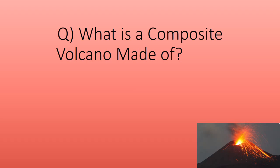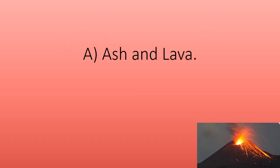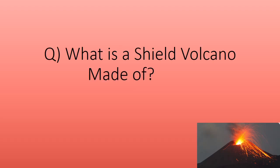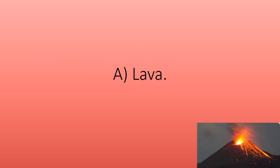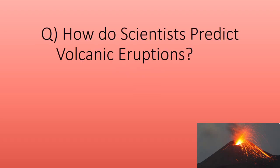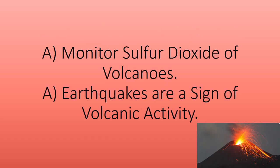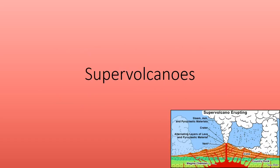What is a composite volcano made of? What is a shield volcano made of? How do scientists predict volcanic eruptions? They monitor sulfur dioxide of volcanoes; earthquakes are also a sign of volcanic activity.